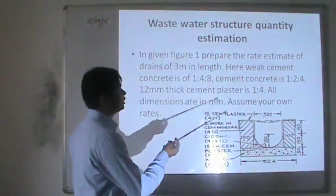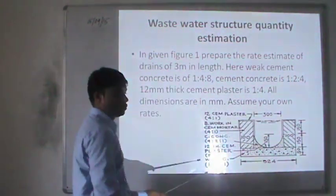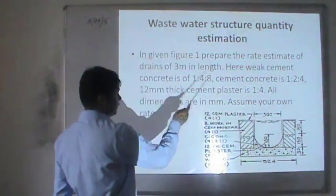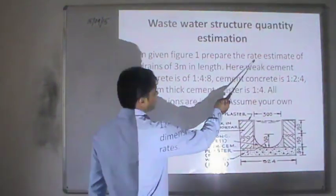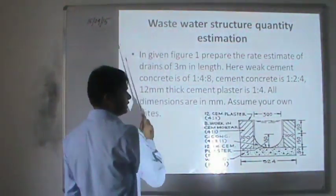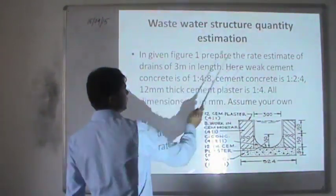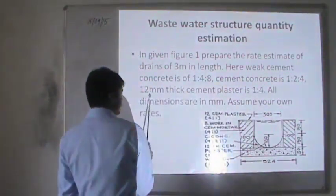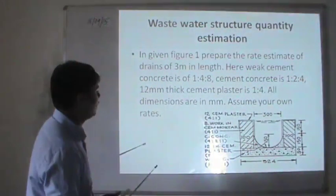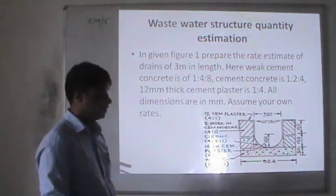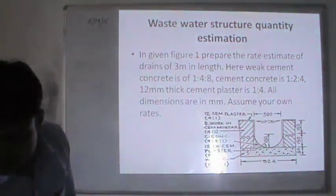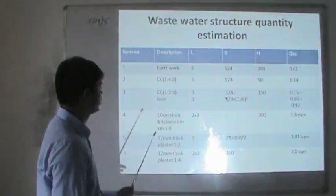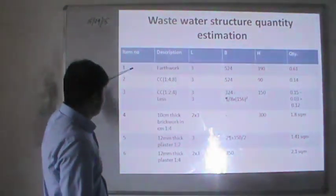Next, if we are given a wastewater structure and asked to find the quantity estimation, we look at the given figure. We have prepared the rate estimate of a drain of 3 meter length. The drain uses weak cement concrete 1:4:8, cement concrete 1:2:4, and cement plaster 1:4. All dimensions are in meters. Item 1 will be the earthwork.